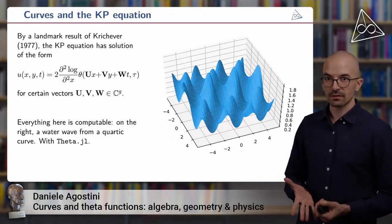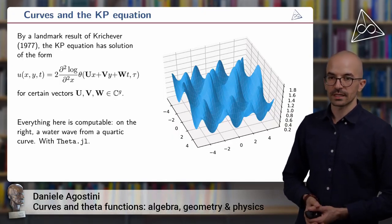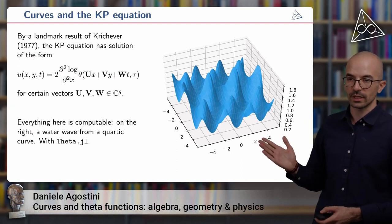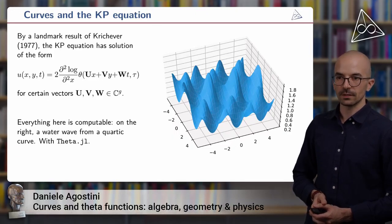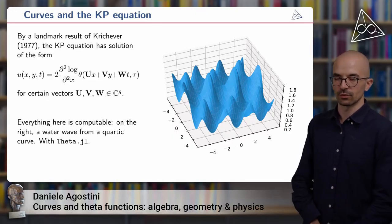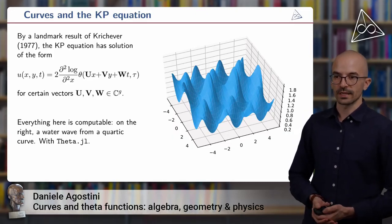So I would like to stress that everything here is very concrete and computable. For example, here you can see an example of a water wave that comes from a smooth plane quartic curve. In particular, this is the Trott curve that we are going to see later. And we computed this example with our software package theta.jl.